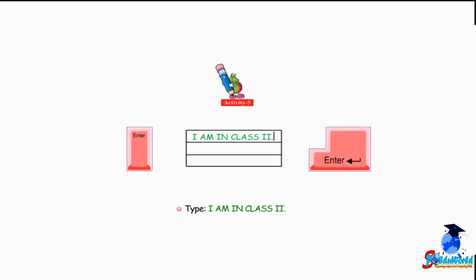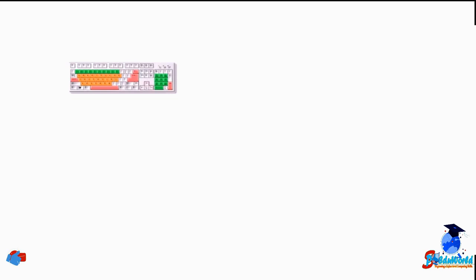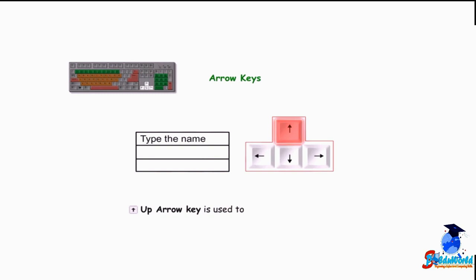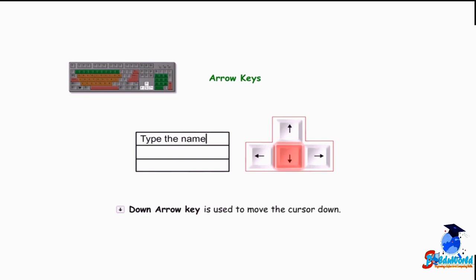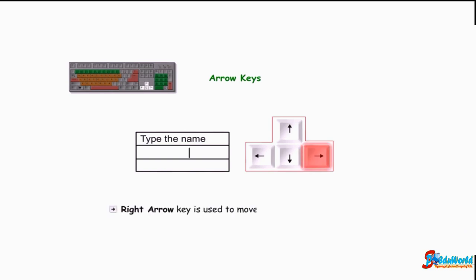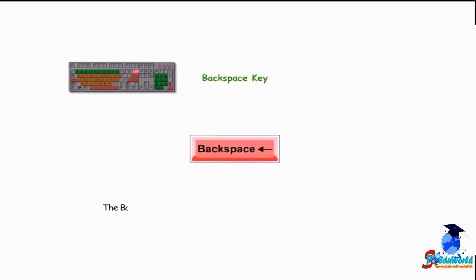For example, type 'I am in class second', press the Enter key once, and the cursor will jump to the next line. Arrow keys — there are four arrow keys that help to move the cursor on the screen. The up arrow key moves the cursor up, the down arrow key moves it down, and the left arrow key moves the cursor to the left.